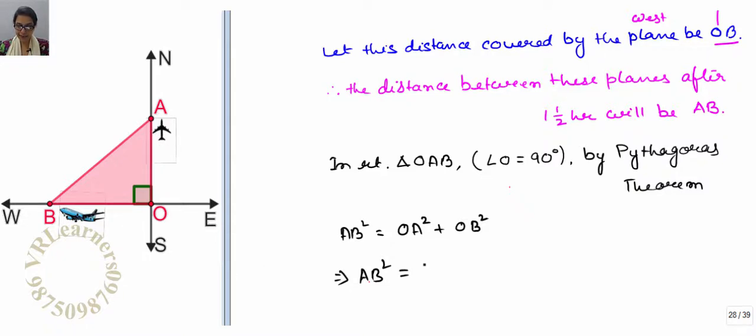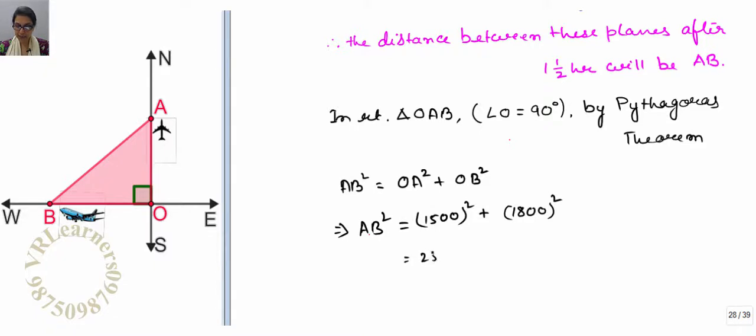AB squared equals 1500 squared plus 1800 squared. Equals to 15 squared, 225. Since here we have four zeros, 18 squared is 324. Now two zeros, four zeros.